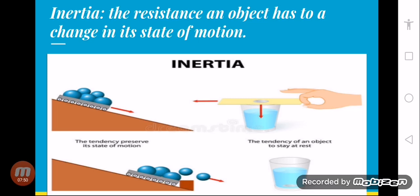The next example: if we take a coin and place it on a piece of paper on top of a glass, and if we pull the paper out quickly with a hard, sharp pull, then our coin will continue to keep its position due to inertia and will fall into the glass.